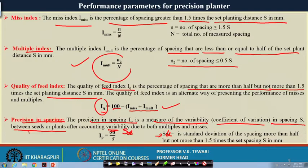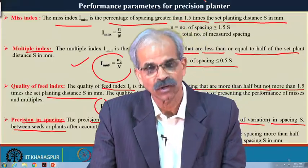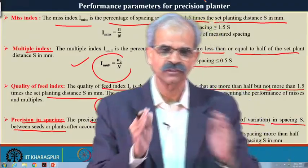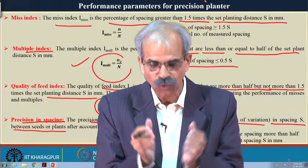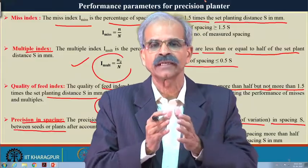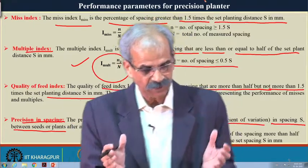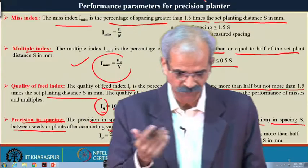The performance parameters — miss index, multiple index, quality feed index, and precision in spacing — describe the performance of a precision planter. Precision seeding is very important: losses should not occur. If a seed is properly placed in the right soil environment with less congestion from other plants or weeds, it grows well, produces more tillers, and yield is also very high.